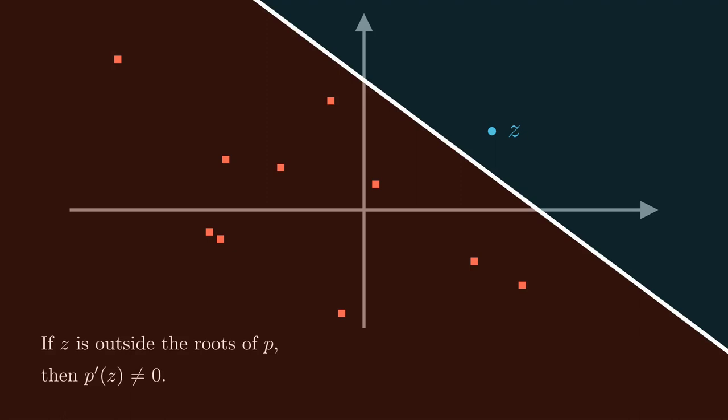Well, now I can write down a theorem with enough precision that I have some hope of being able to prove it. If there's a line separating my point z from the roots of my polynomial p, then p prime of z is non-zero. This is what I want to show.